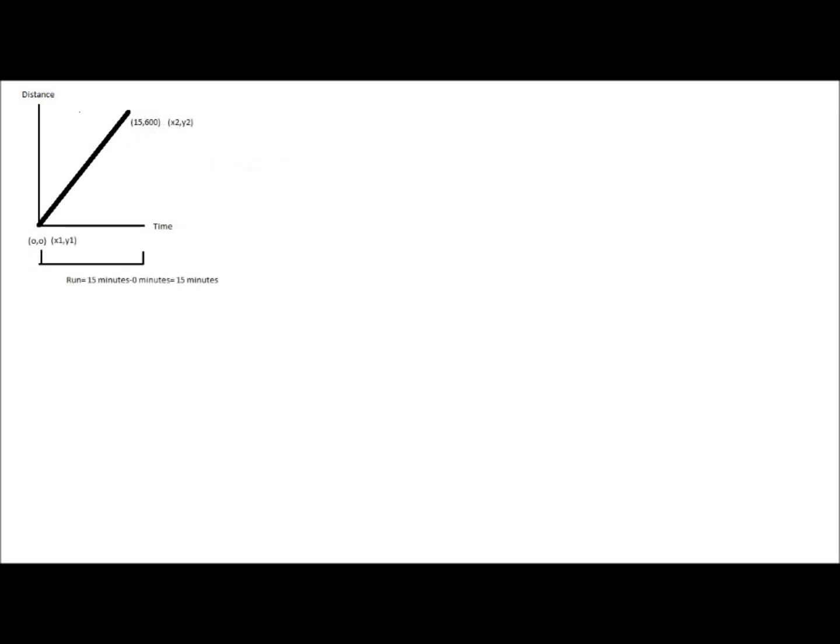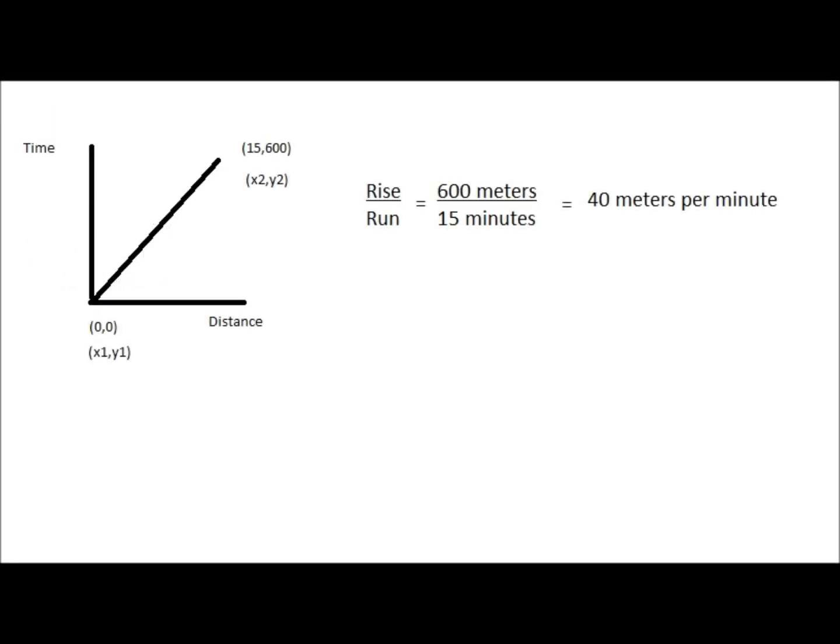Megan's classroom is 600 meters away from the bus stop and she has 15 minutes until her test starts. So, to calculate how fast she'll have to run to get there on time, we take her rise — in this case 600 meters — and divide by her run — in this case 15 minutes. She'll have to jog at a pace of 40 meters a minute to get to her test on time.